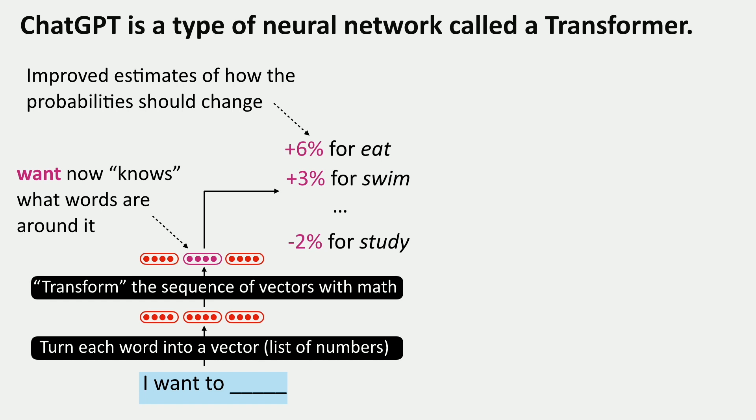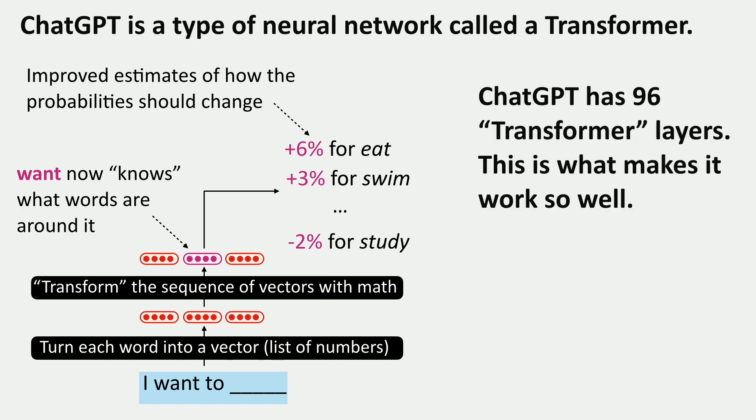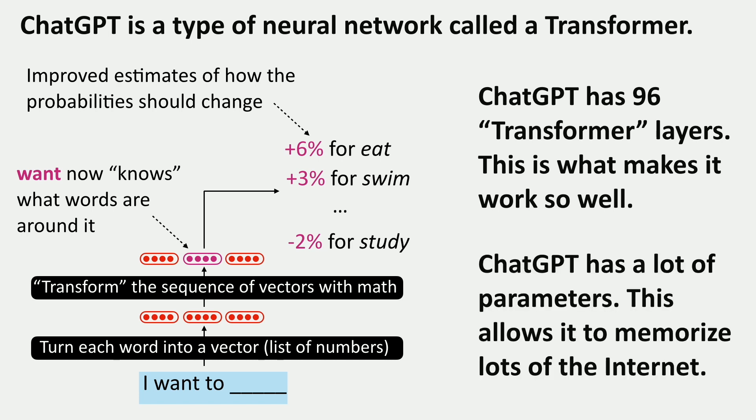What I'm showing here involves only one step of this transformation, but ChatGPT is a transformer with 96 layers, which is why it works so well. The transformer was invented in 2017 and back then people were only using six or twelve layers. In the past few years it's gone from six to 96 layers, and that's part of why these systems have gotten so much better. This also gives it a lot of parameters — the plus 6%, plus 3%, minus 2% values shown are examples of parameters. ChatGPT has 175 billion of them, allowing it to memorize all kinds of information from its training data.